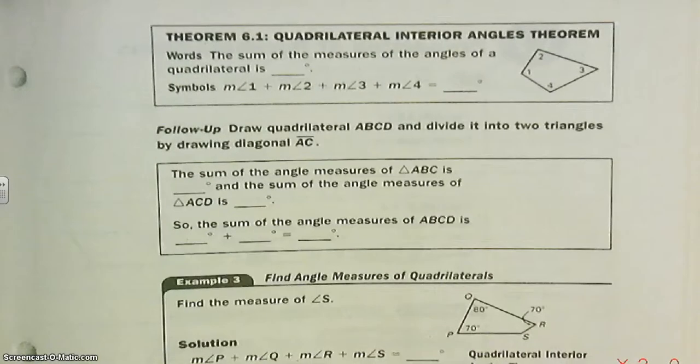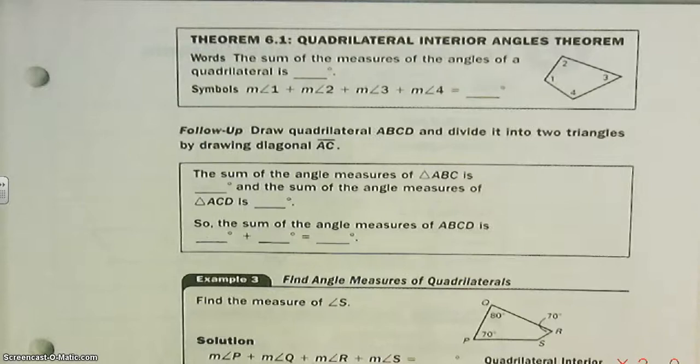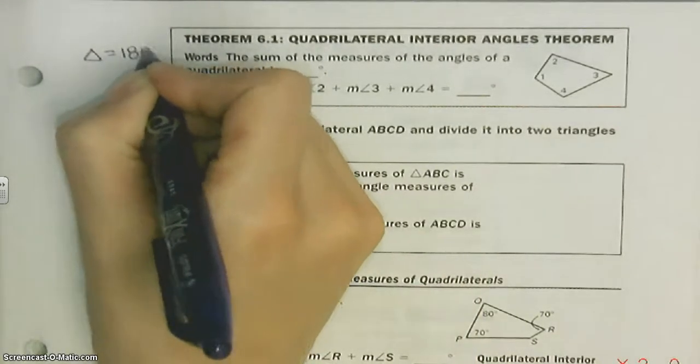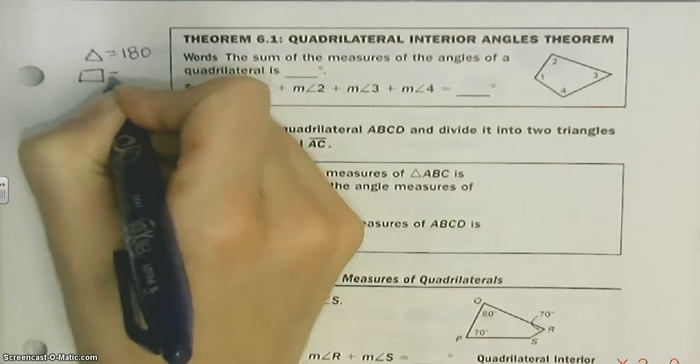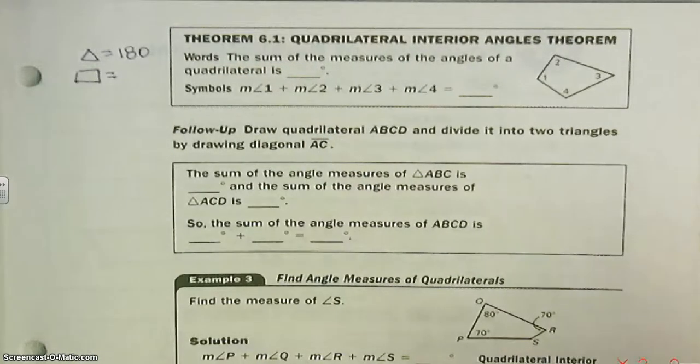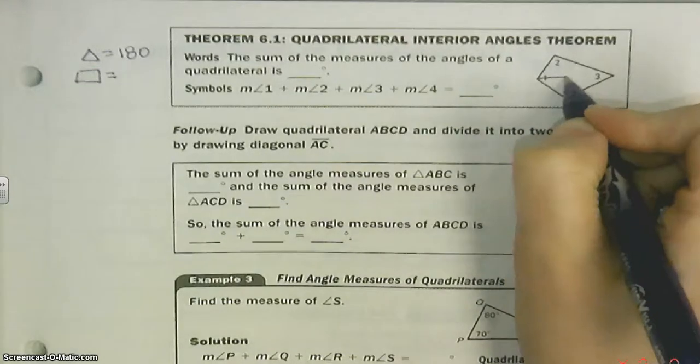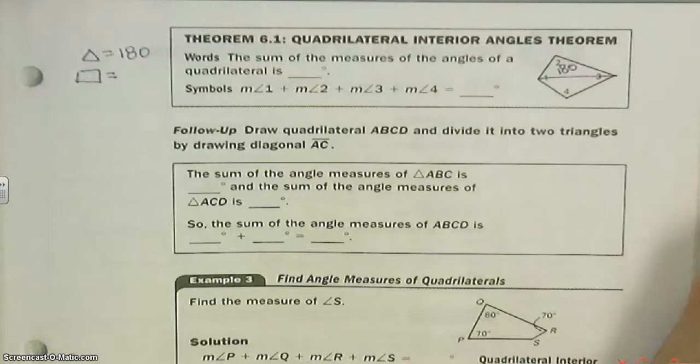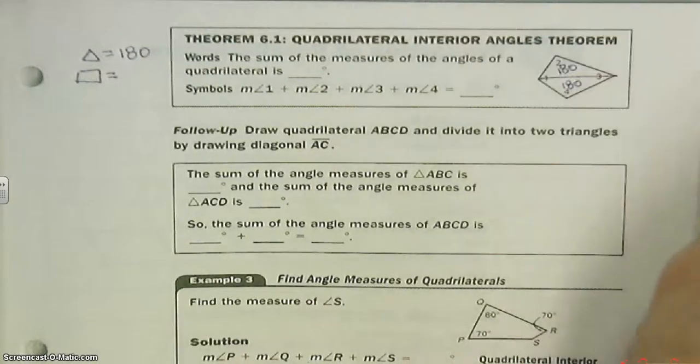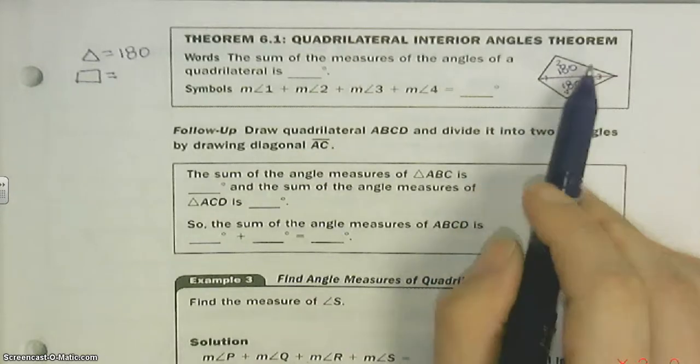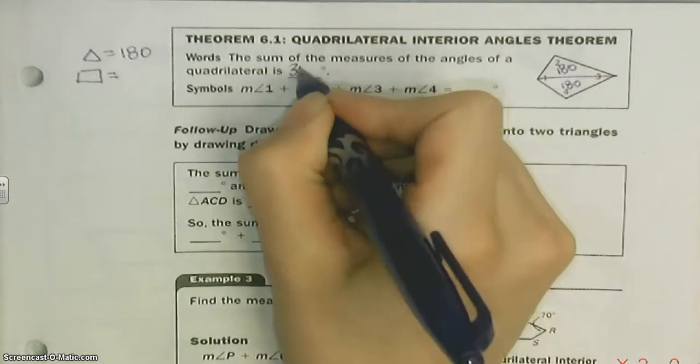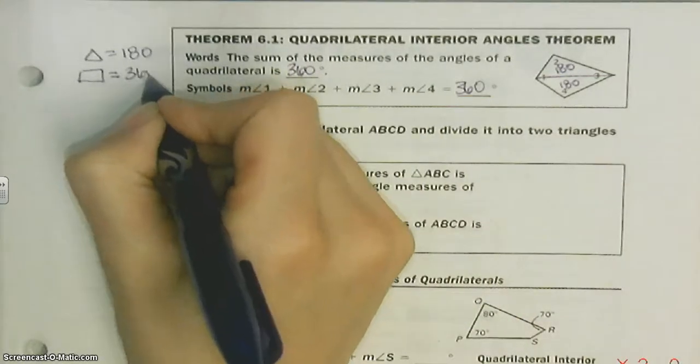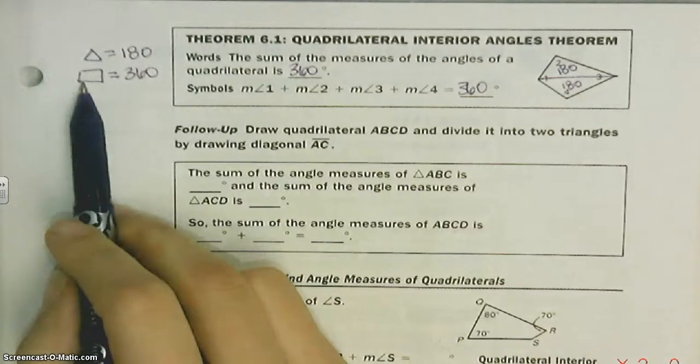Quadrilaterals. So we've talked about before—we know that triangles have 180 degrees. So let's write that over here: triangles equal 180. Now we're working with quads. So quads have four sides. How many degrees do quads have? What I want you to do is cut this quad into two triangles. So if this triangle has 180 degrees, and this triangle has 180 degrees, that must mean this whole shape has 180 plus 180, which is 360. There's 360 degrees in a quad. So triangles have 180, quadrilaterals have 360.